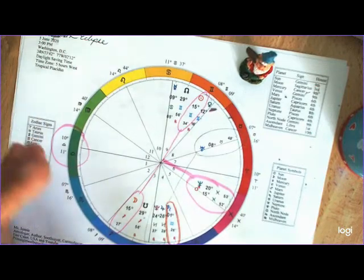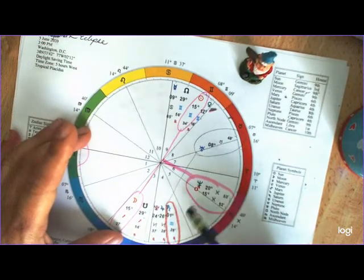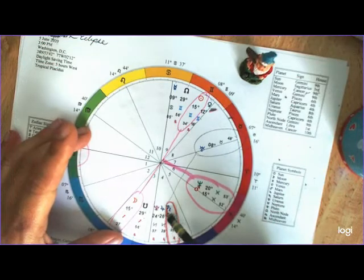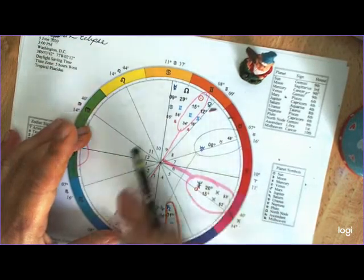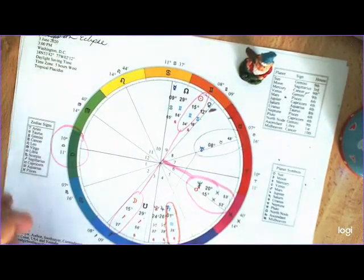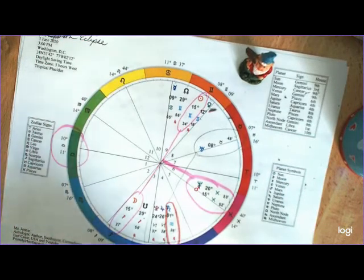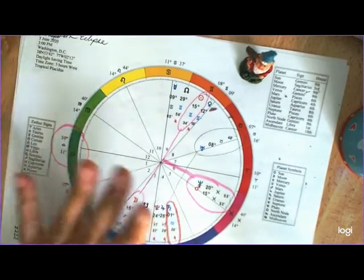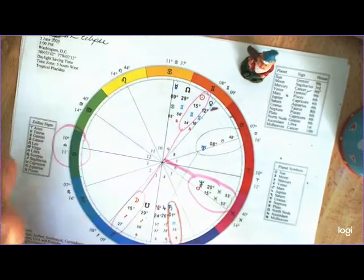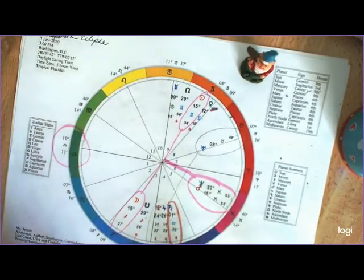But it doesn't change the fact that the original ruler of Aquarius was Saturn. So Saturn and Uranus, these are both rulers of Aquarius. So this means that the sign of Aquarius, its rulers, both of them, are now in conflicted aspects of each other. And we've been feeling this since Saturn went into Aquarius setting up that square Uranus.